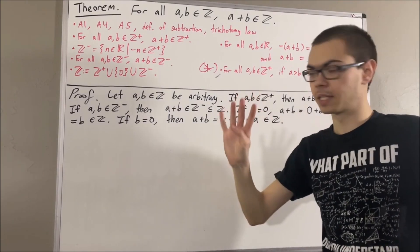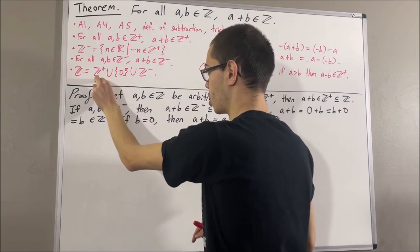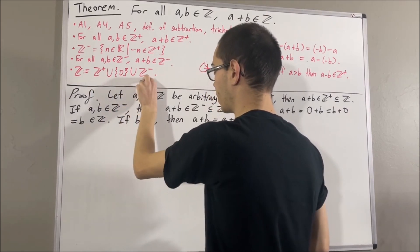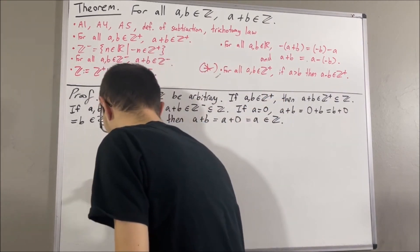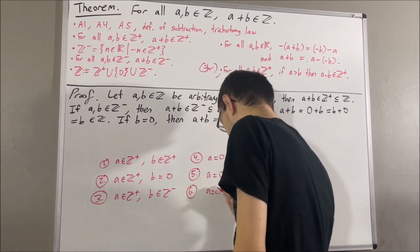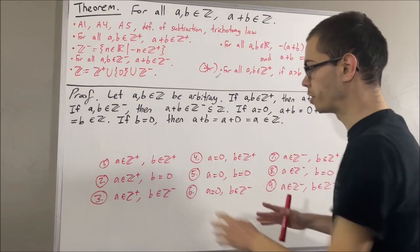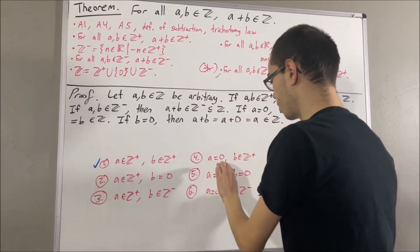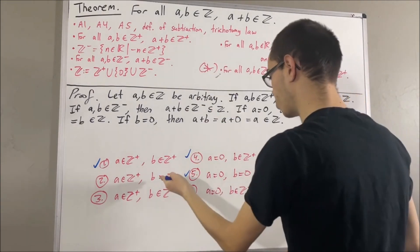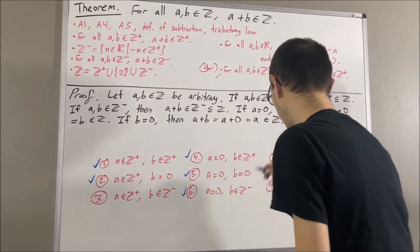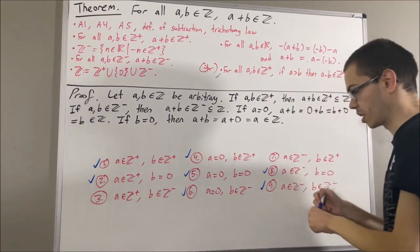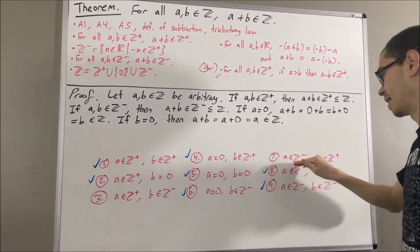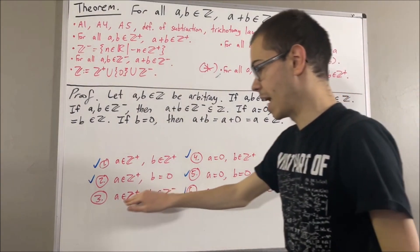At this point we have considered four possibilities, giving us a total of nine combinations. The remaining two cases are: a is a positive integer and b is a negative integer, or a is a negative integer and b is a positive integer. Let's first consider the case where a is a positive integer and b is a negative integer.